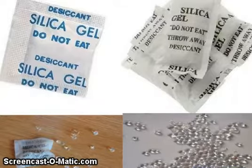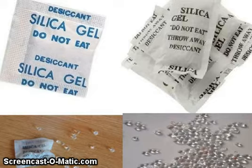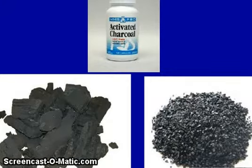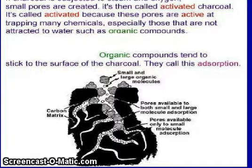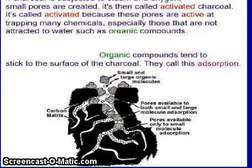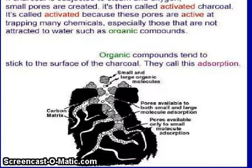You can see desiccant silica gel here. This is activated charcoal — you can see activated charcoal. This is alumina powder. If charcoal is subjected to steam and oxygen, small pores are created; it is then called activated charcoal. It is called activated because these pores are active at trapping many chemicals, especially those not attracted to water, such as organic compounds. Organic compounds tend to stick to the surface of the charcoal — this is called adsorption.